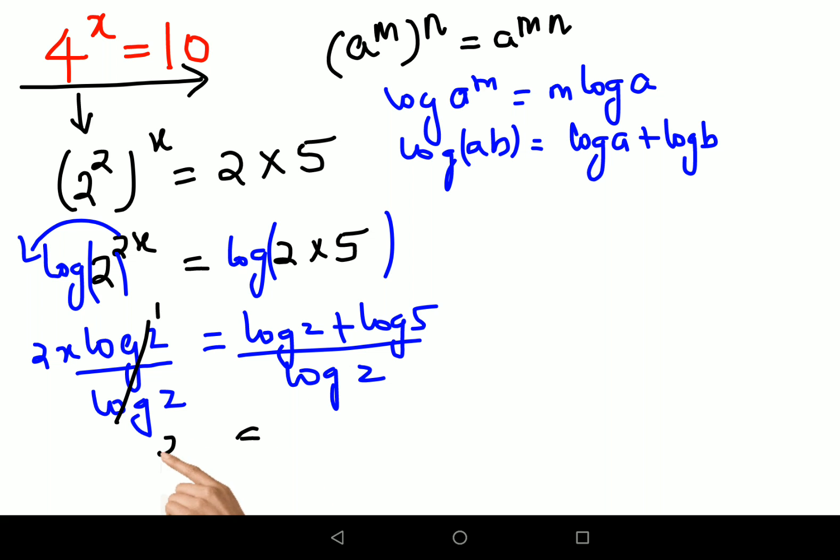So here this then becomes what? 2x equals to log—let's split the numerators—log 2 upon log 2 plus log 5 upon log 2.